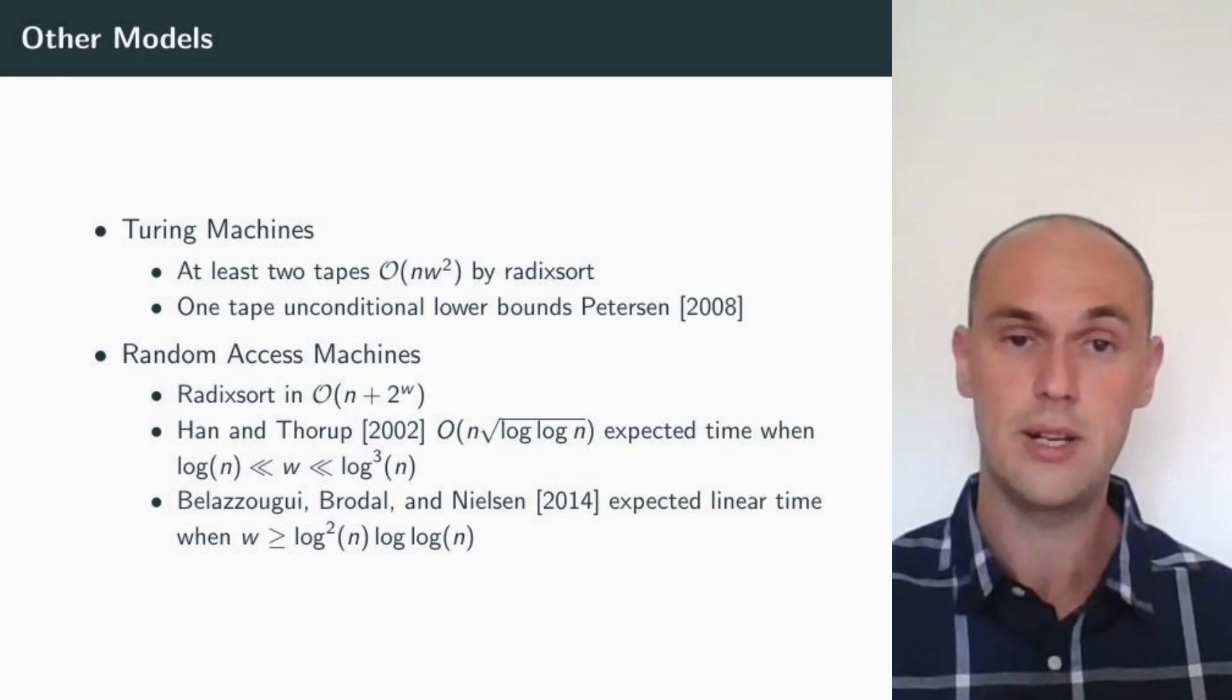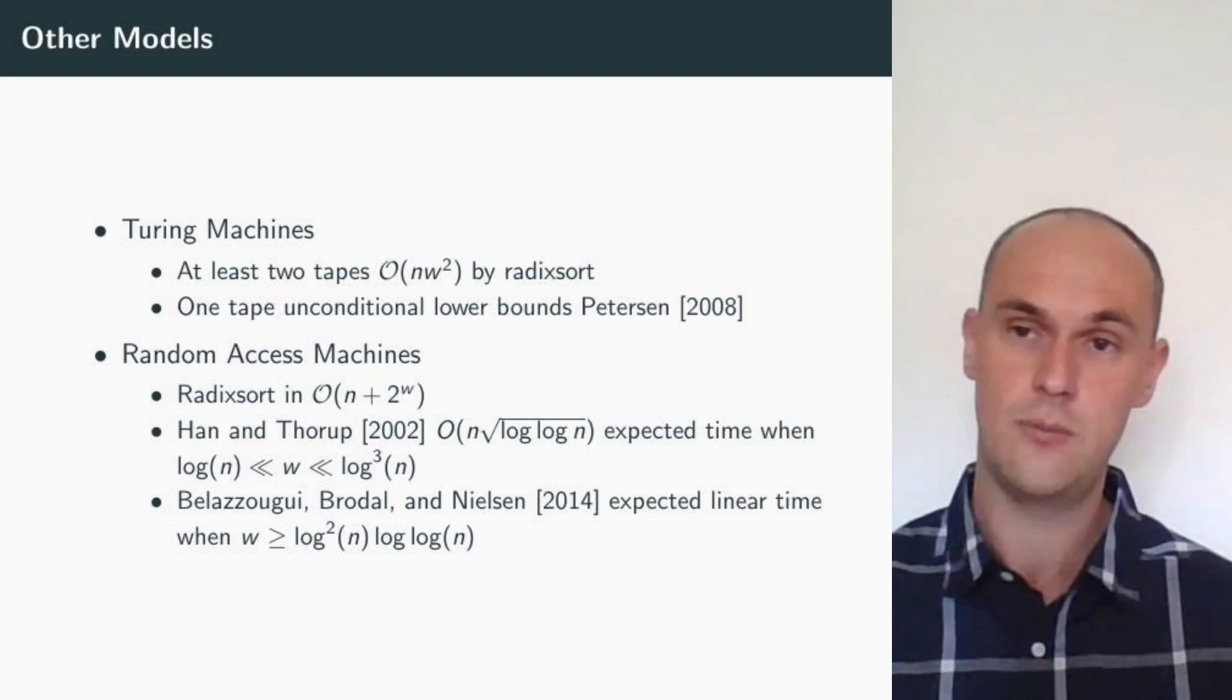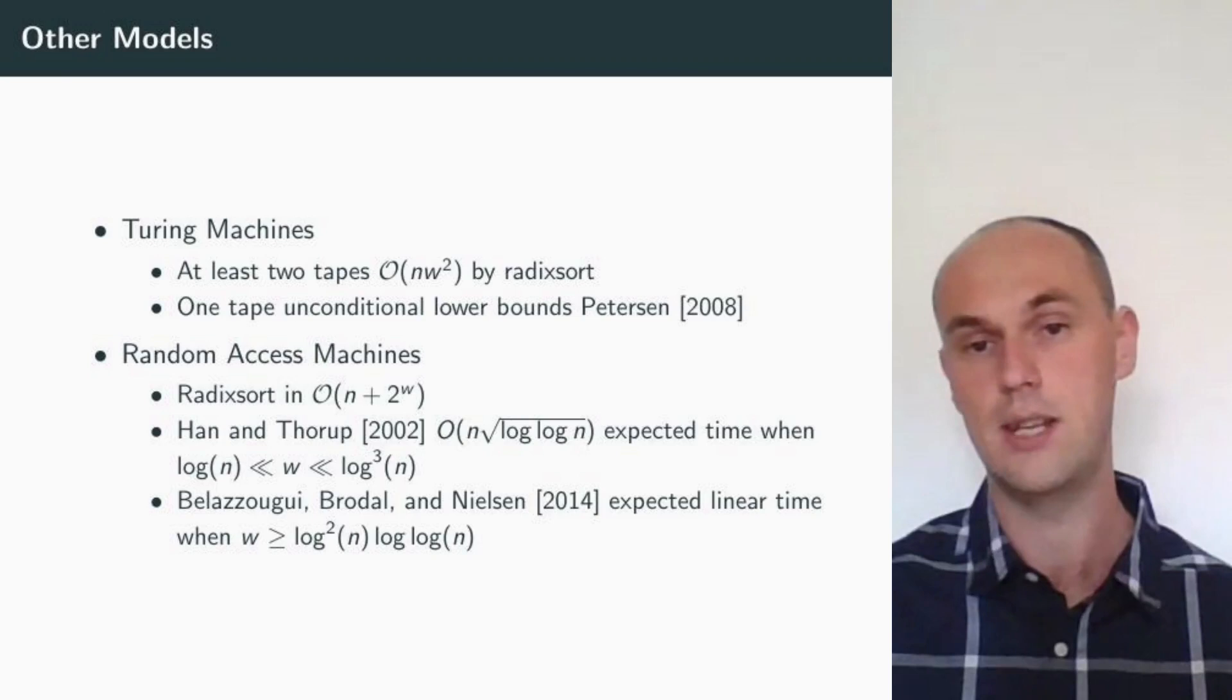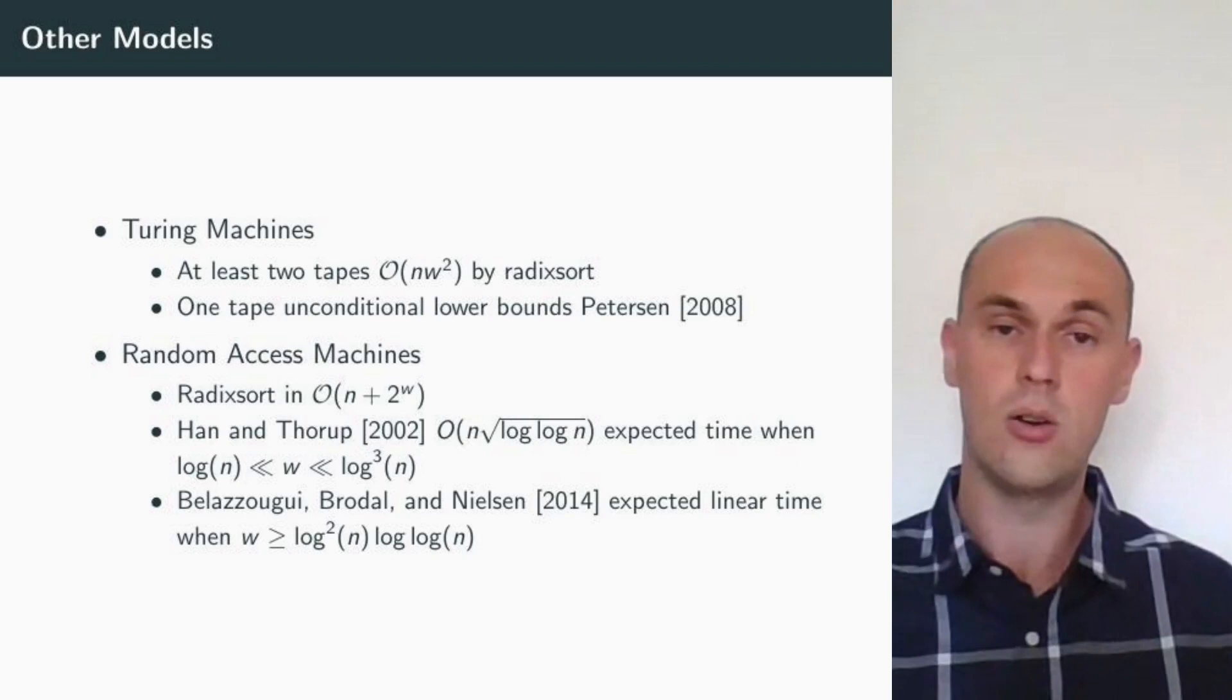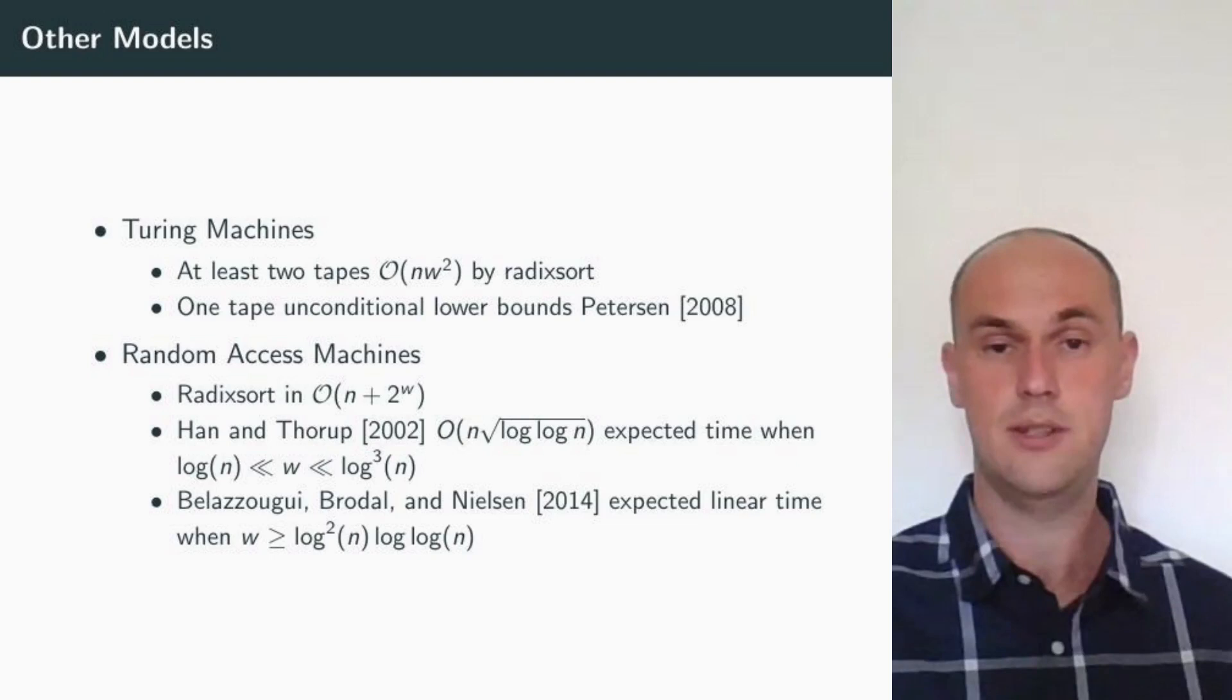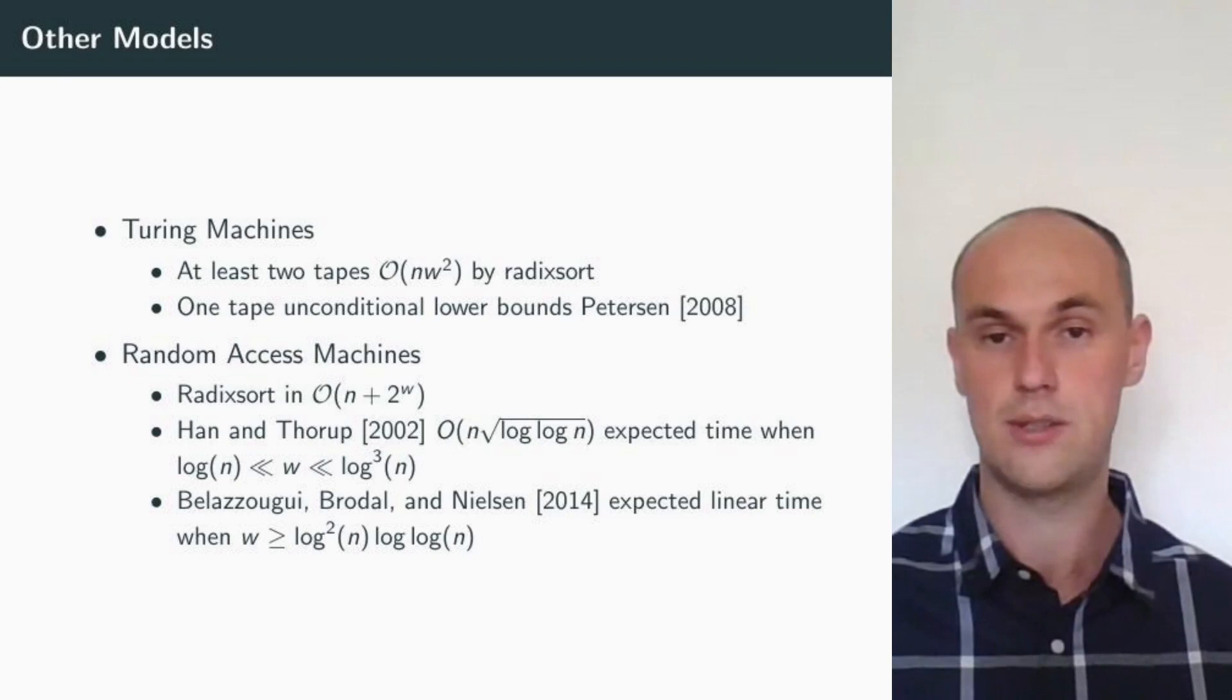Just a comparison with other models. In the case of Turing machines, when we have at least two tapes, then radix sort runs in n w squared time. On the other hand, in the one tape case, unconditional lower bounds date all the way back to Hennie, and recently Peterson in 2008 gave an unconditional lower bound for sorting on one tape Turing machines which are non-deterministic. On the other hand, sorting in random access machines, radix sort is relatively easy for small w because it runs in time n plus 2 to the w when w is at most log n, we get linear time.